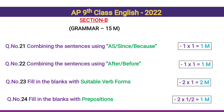Question 21: Combining sentences using linkers such as 'as,' 'since,' 'because' — 1 mark. Question 22: Combining sentences using 'after' or 'before,' textual — 1 mark. Question 23: Fill in the blanks with the suitable form of verbs — 2 questions for 2 marks. Question 24: Fill in the blanks with appropriate prepositions — 2 halves for 1 mark.